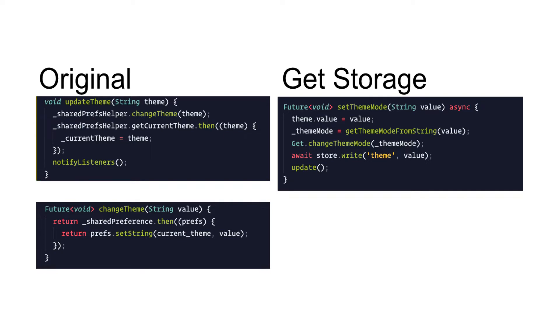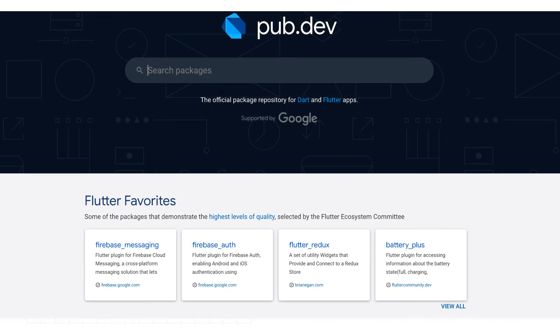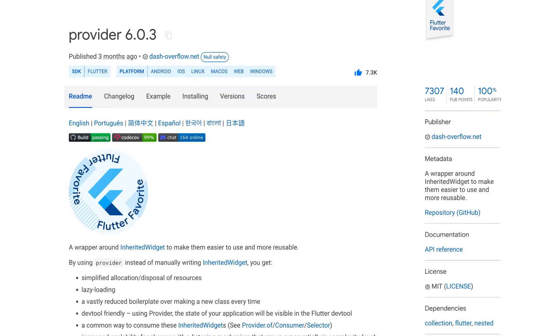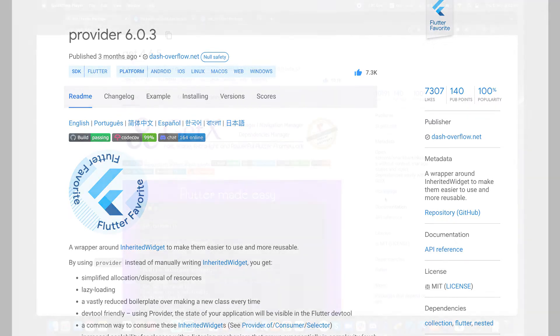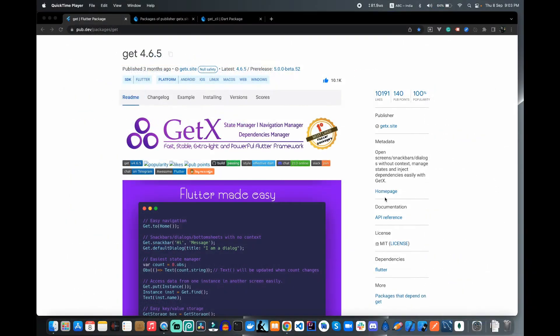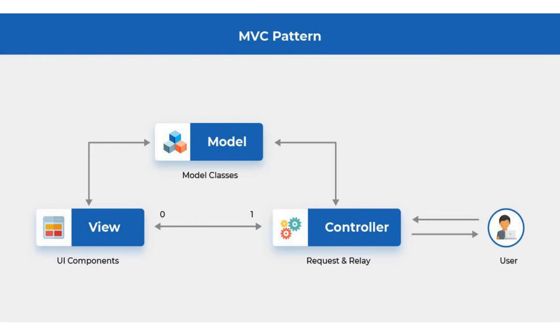This is the most difficult process when you are using real-time applications. This problem is solved with various types of packages already listed on the pub.dev website. But the problem is, if you use state management with the provider package, there are so many things to learn. But GetX has everything required for a proper MVC structure-based framework, so you can definitely use this package for your application development.